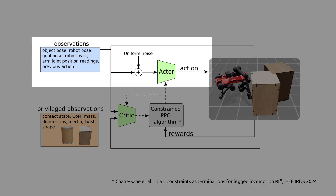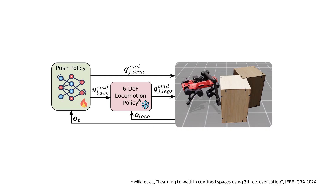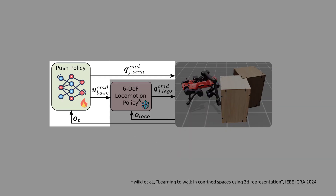The actor network observes the object's 6D pose, goal, previous action, and robot proprioception. The critic has access to privileged, noiseless data available only in simulation, such as object properties and contact state. The trained policy outputs 6D Cartesian commands for the base and joint position commands for the arm.